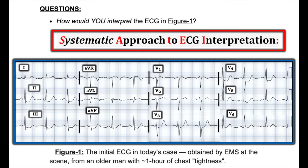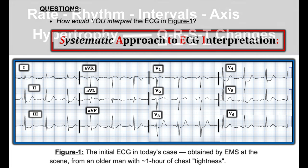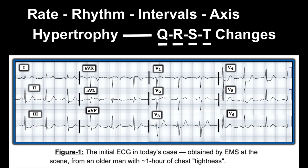Applying this to our case: looking at lead II, I see an upright P wave with a constant PR interval. The rate is about four large boxes — approximately 75 bpm. This is a regular sinus rhythm at rate 75. The PR interval is not more than a large box, and the QRS is not more than half a large box. The QRS is narrow — supraventricular sinus rhythm with no conduction defect.